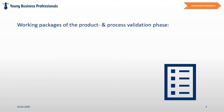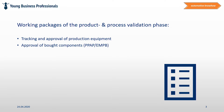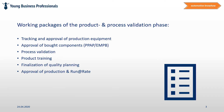The Product and Process Validation Phase may be split into the following working packages: tracking and approval of production equipment; approval of board components; process validation; product trainings; finalization of quality planning; approval of production and run at rates; sampling according to PPAP or EMPB standard; and finally, a quality gate review of Phase 4.